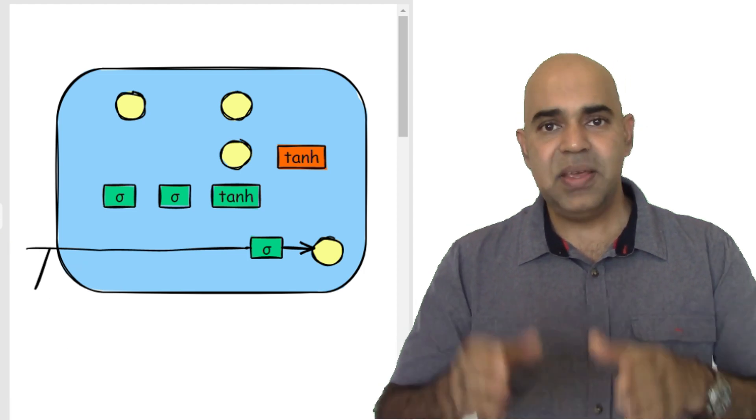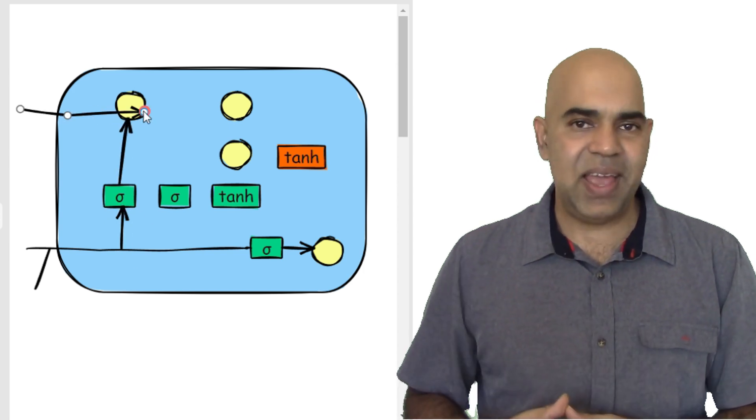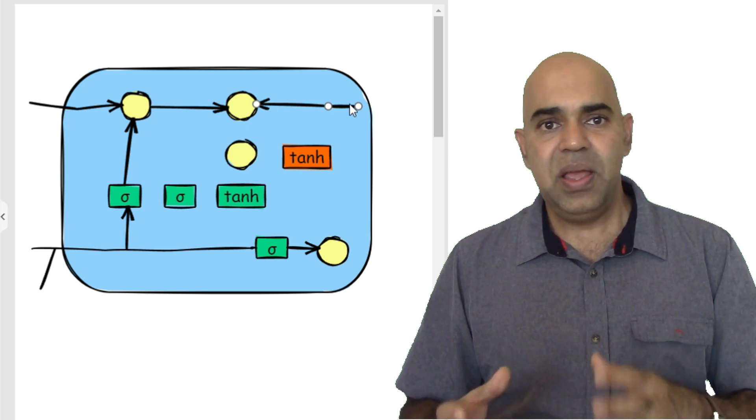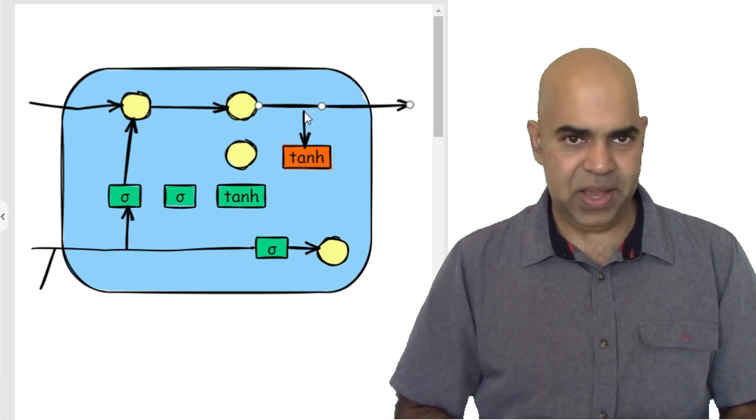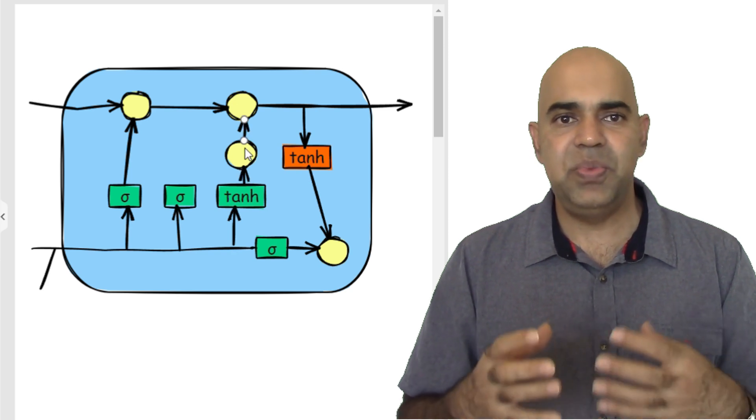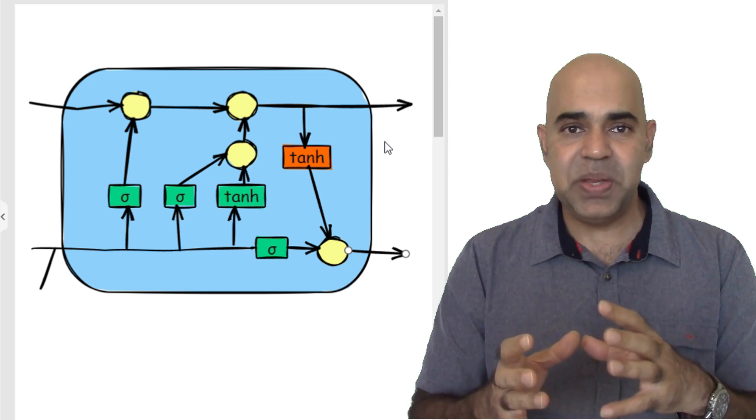LSTMs have three types of gates: the input gate, which controls how much of the new information to let in; the forget gate, which decides what proportion of the existing memory to forget; and the output gate, which determines what parts of the current state should be output.